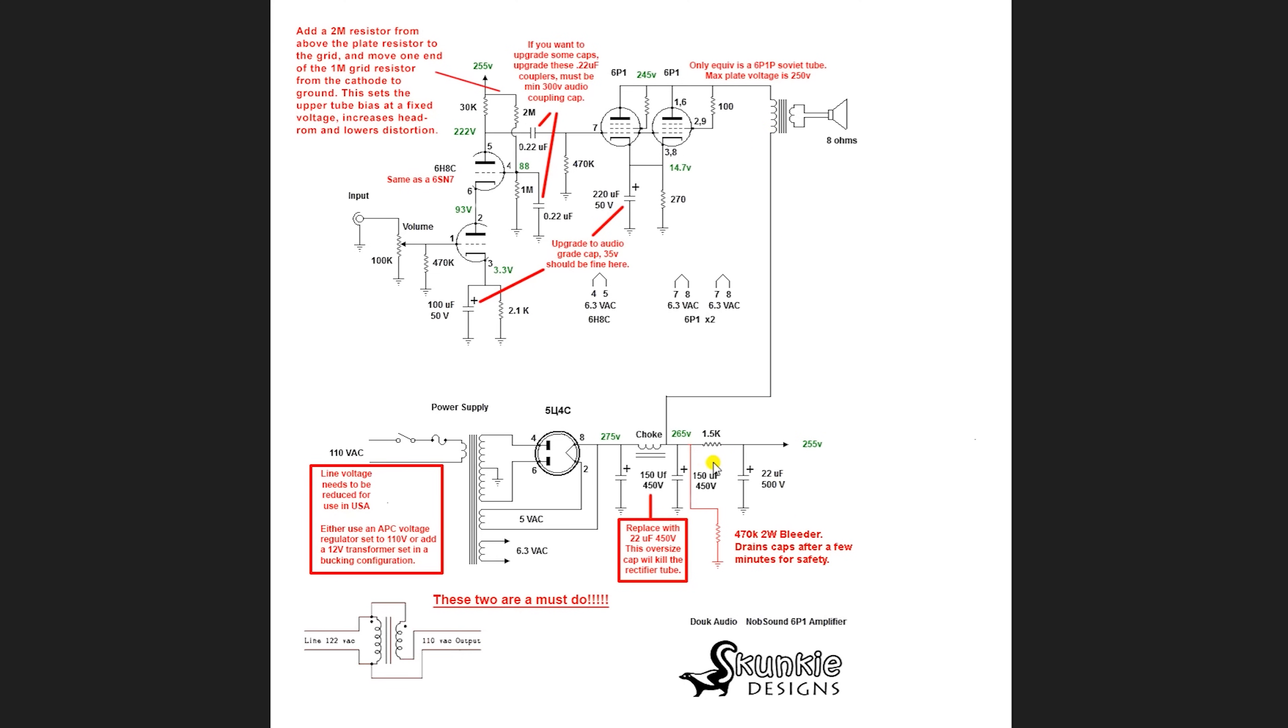Then we have this 1.5k dropping resistor, we did add this 470k 2 watt bleeder resistor that bleeds the voltage off these caps when you turn the amp off, which is always a good idea to have on a tube power supply. So we have a 1.5k, and we have a 22 UF filter cap here, this decouples this 255 volts from the power going to the output transformer. And then this goes to the front of the amp. So we got 265 volts, 255 volts, and then what's up here is all going to change. So let's look at the first early version of Dave G's MAGI mod.